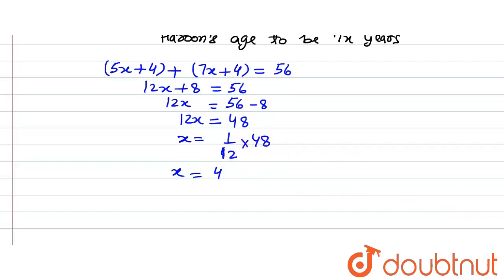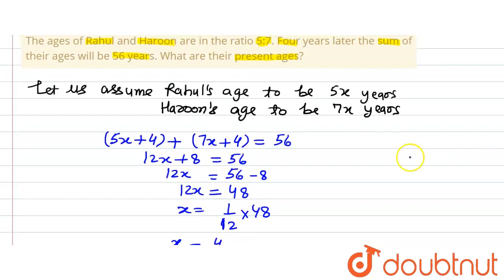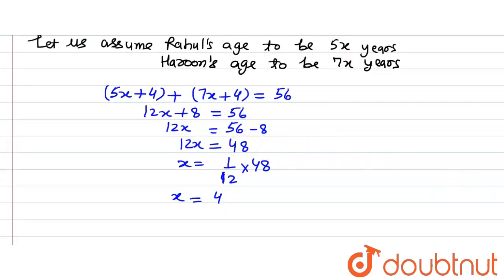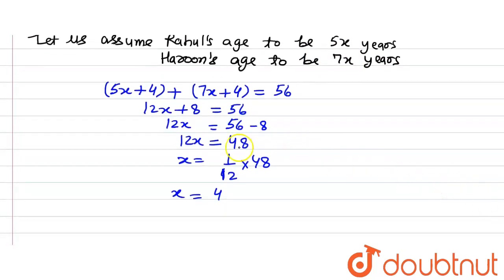Now in the question we were asked to find out the present ages and we have assumed the present ages of Rahul to be 5x. So we will put x equals 4 here and we will be able to get the age of Rahul. So let's find out. Rahul's present age is equal to 5x, which means 5 multiplied by 4 is equal to 20 years. Now we will find out